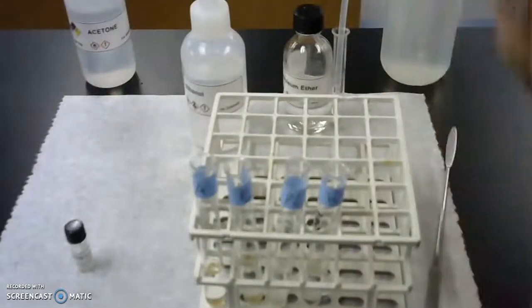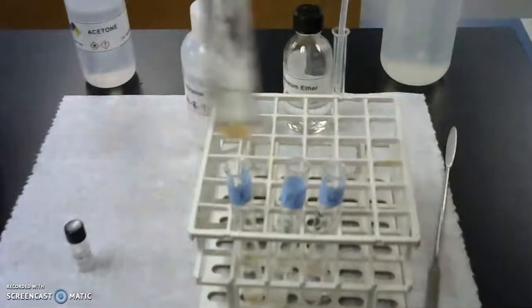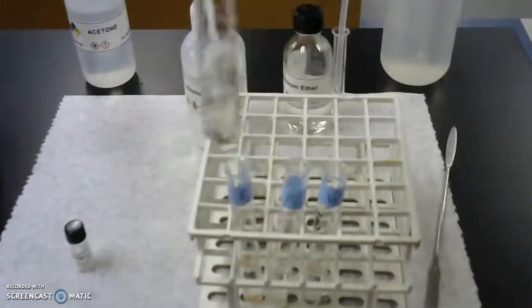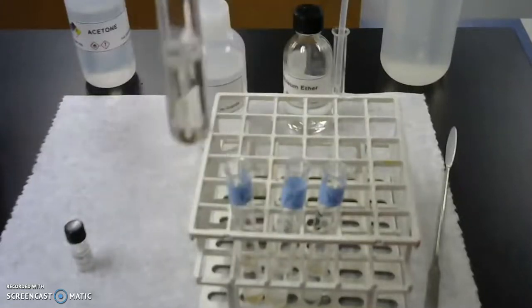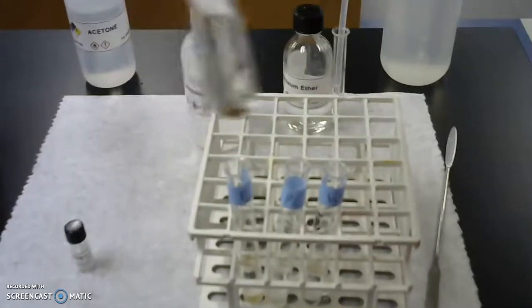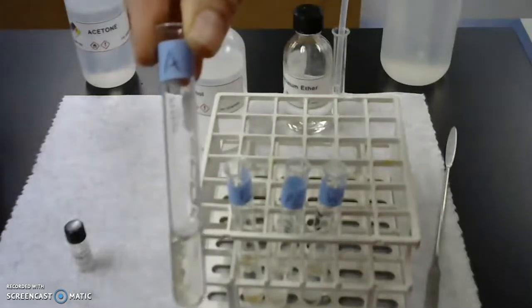So we're going to mix all of these up and look at what happens to them, and I want you to record your observations here. So this is the acetone. There's a little bit of the acetanilide in the bottom, and now I'm swirling it. And I want you to record what you see in terms of is there any left or is there none left in the acetone.